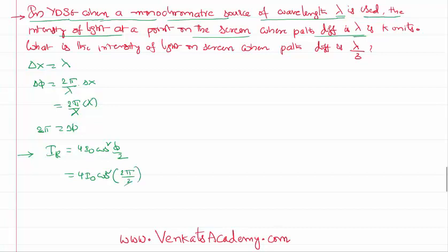2π/2, that is cos π. Cos π is equal to -1, so its value is going to be equal to 4I₀.